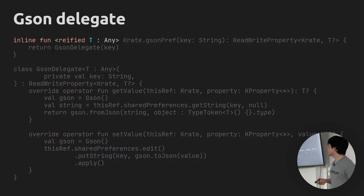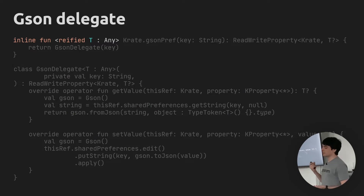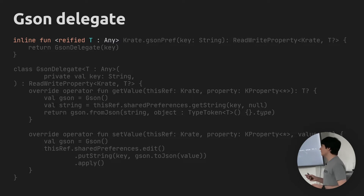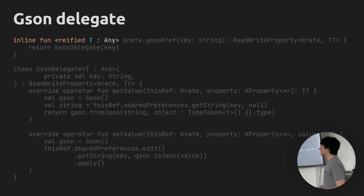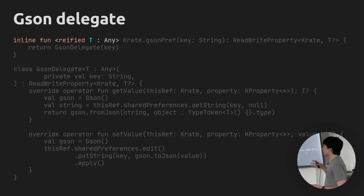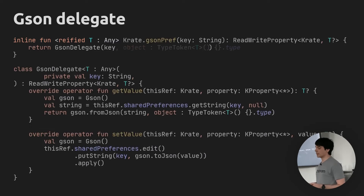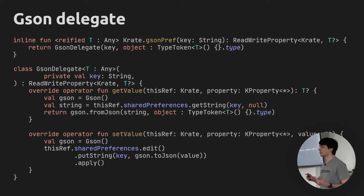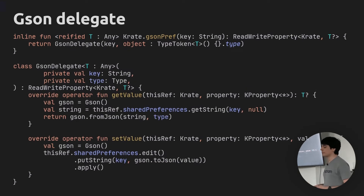Kotlin can help us here with reified generics. If you mark a generic type parameter with the reified keyword, the actual real value of that type parameter will be available inside your code. This only works in inline functions because it's a compile-time trick that uses inlining. It's good that we're already using a factory function, because this way we can create the type token inside that factory function while we still have the correct type information, and then pass that type value to the delegate class.